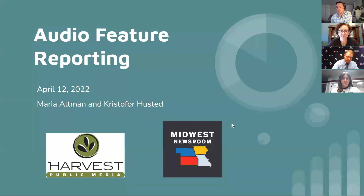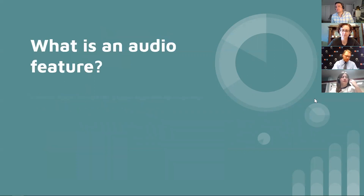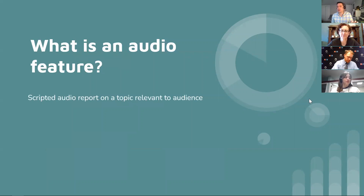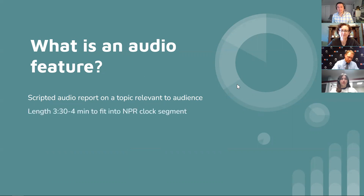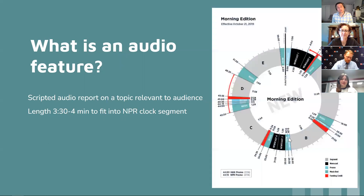Let's get started. Today we're going to talk about prepping, what a feature is, what is in a feature, and how to pitch your editor and find stories. A basic audio feature is a scripted audio report on a topic relevant to your audience — something with news value you deliver to your audience. Generally in most newsrooms that's three and a half to four minutes. There are slots in the NPR clock — you see A, B, C, D, and E — that's where features go.